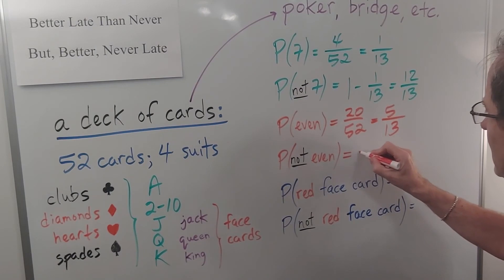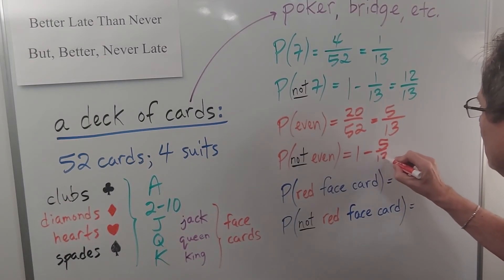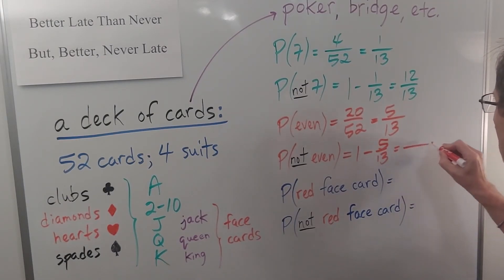And so the probability of not getting an even number, getting anything else, is one minus five over thirteen. Which is eight out of thirteen.